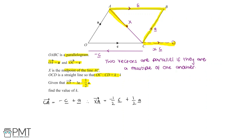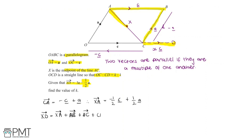We know that A to B equals c, and for B to C: we're given that the vector CB equals a, so the vector B to C equals minus a. Now we can write out an expression for XD: XD equals XA plus AB plus BC plus CD, which equals minus half c plus half a, plus c, plus minus a, plus Xc — where X is the unknown scalar.